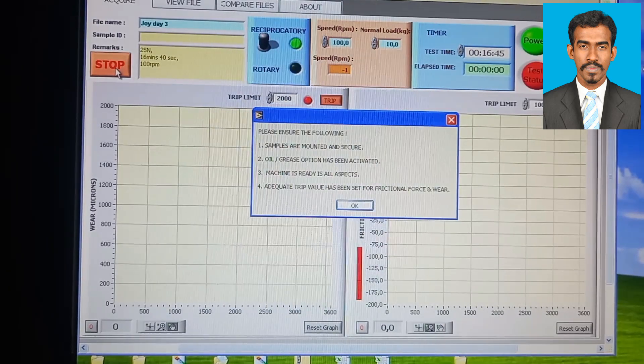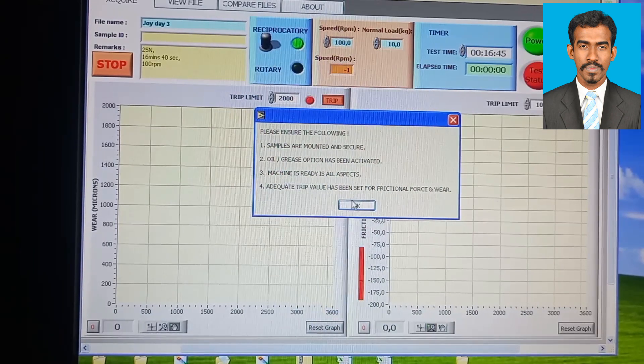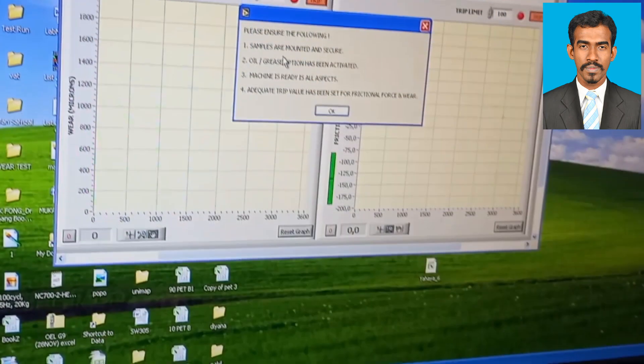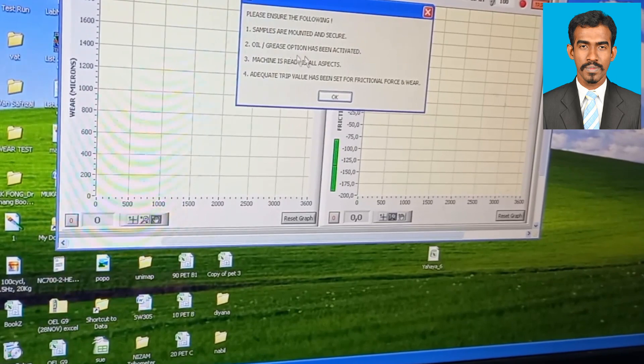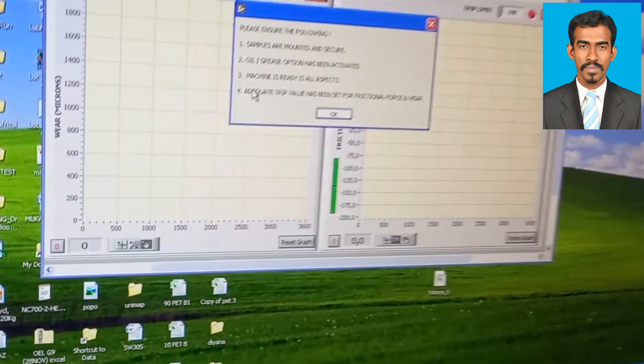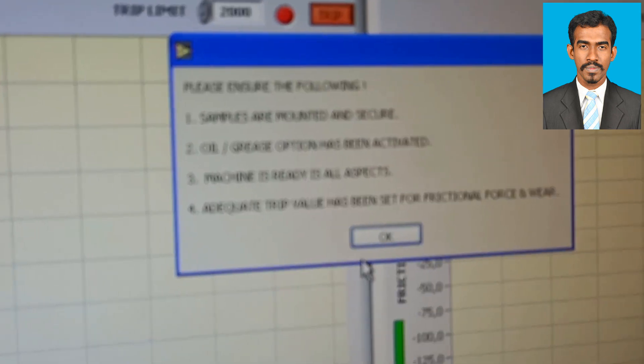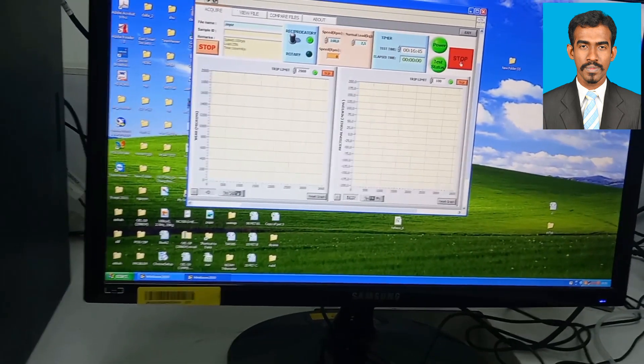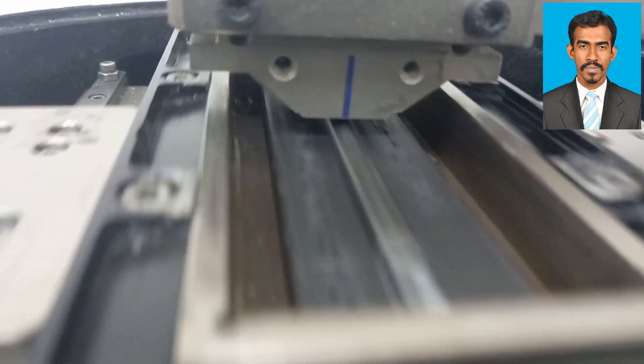Then we'll press acquire. It will show some guidelines to check. We need to ensure these guidelines before running the machine. If we are running with oil, we need to ensure that oil flow is there. We need to cross-check all these conditions before the run. Once we are sure about all these parameters, we can start the run.